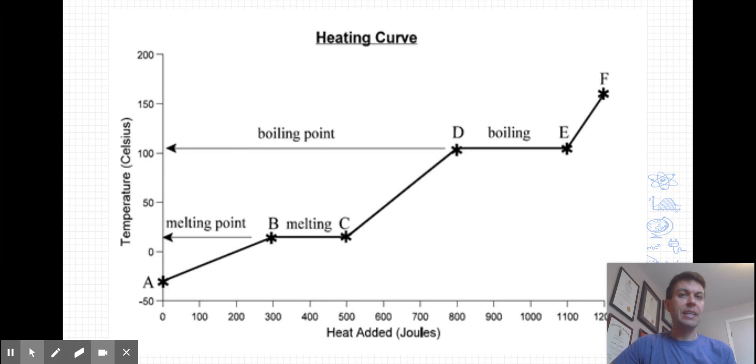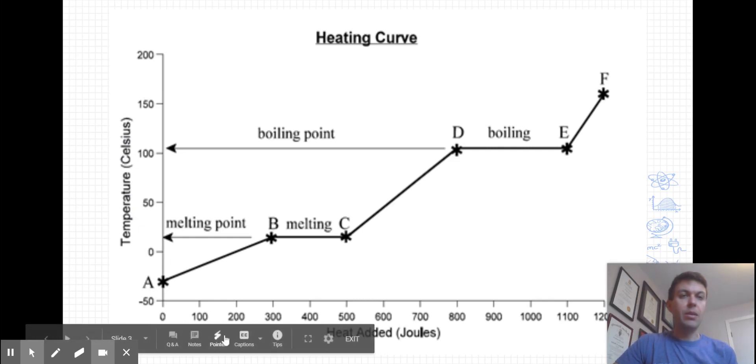Let's start off by looking at a heating curve. On the vertical axis on the heating curve, I have temperature, which is increasing. On the horizontal axis, I have heat added. In this case, it's in joules.